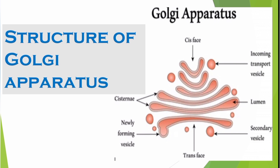The structure of the Golgi apparatus is called the cis face and the trans face. There are incoming transport vesicles, secondary vesicles, and newly forming vesicles. The internal compartments are called cisternae and lumen, or tubules.